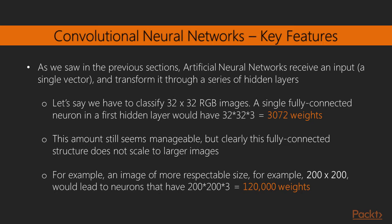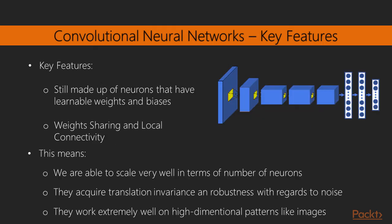Clearly this full connectivity is wasteful and the use of a huge number of parameters would quickly lead to overfitting. Convolutional neural networks are still made up of neurons that have learnable weights and biases, but what makes them better and more efficient is the concept of weight sharing and local connectivity.